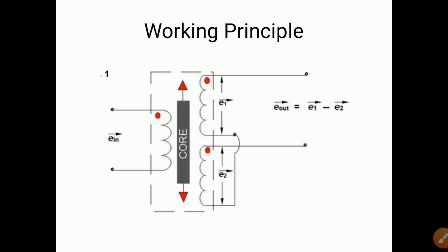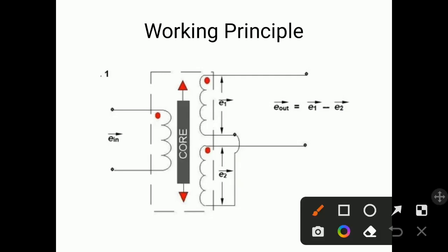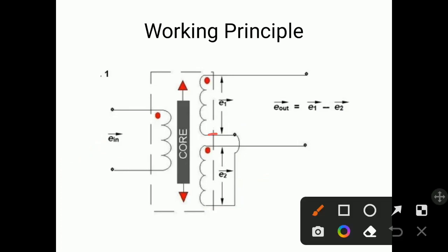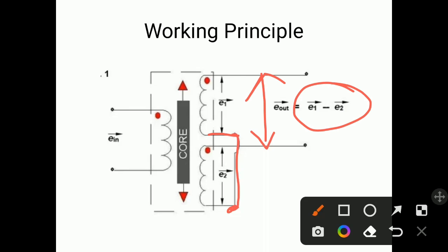Now we will study the working principle. When input voltage E-input is given to the primary coil, because of mutual inductance, voltages E1 and E2 are produced in the two secondary coils. The wires of the secondary coils are connected in series opposition — this wire of the primary coil is connected to the secondary coil in this way. Because of this series opposition connection, the output voltage is the difference of both voltages: E-output equals E1 minus E2.